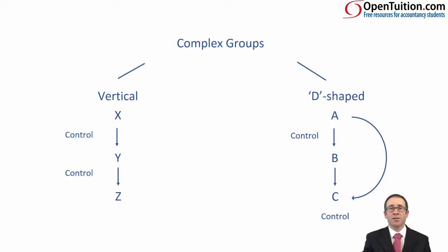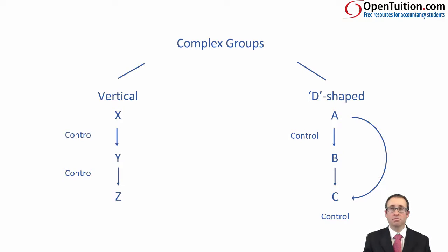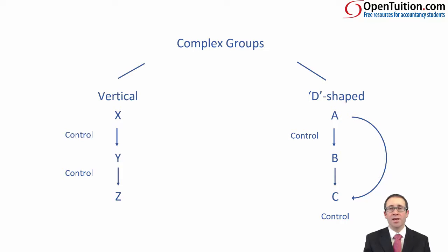You need to spot whether you have a vertical complex group or a D-shaped complex group structure. It should hopefully be quite easy to spot when we start working through the examples later.